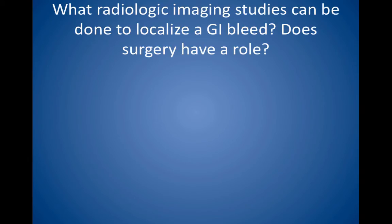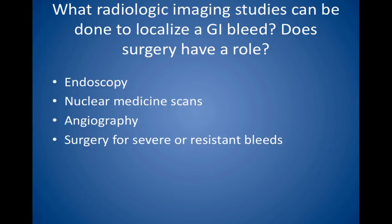What radiologic imaging studies can be done to localize a GI bleed? Does surgery have a role? Nuclear medicine scans can detect slow or intermittent bleeds if a source cannot be found with endoscopy. Angiography can detect more rapid bleeds, and embolization of bleeding vessels can be done during the procedure. Surgery is reserved for severe or resistant bleeds, and typically involves resection of the affected bowel, usually the colon.